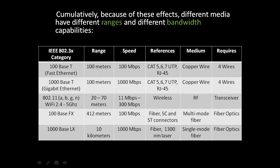Cumulatively, because of these effects, different media have different ranges and different bandwidth capabilities. Take a look at the following table. The first row depicts 100BaseT or fast Ethernet, which has a range of 100 meters and a speed of 100 megabits per second.